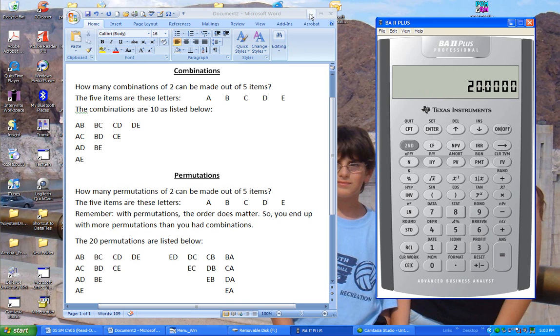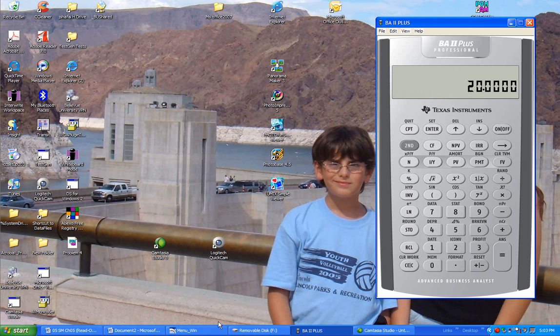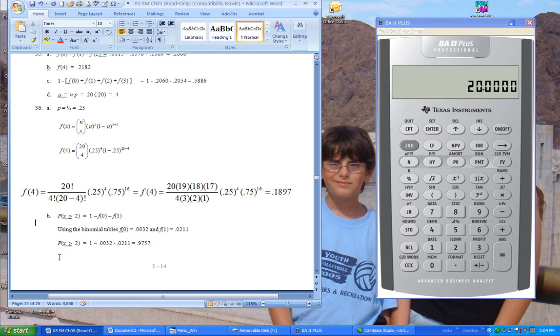Now we can use this in performing our computations for the binomial distribution. Let's take this calculation right here. This is from the solutions manual. We want to know the probability of exactly four observations or four successes out of a group of 20.